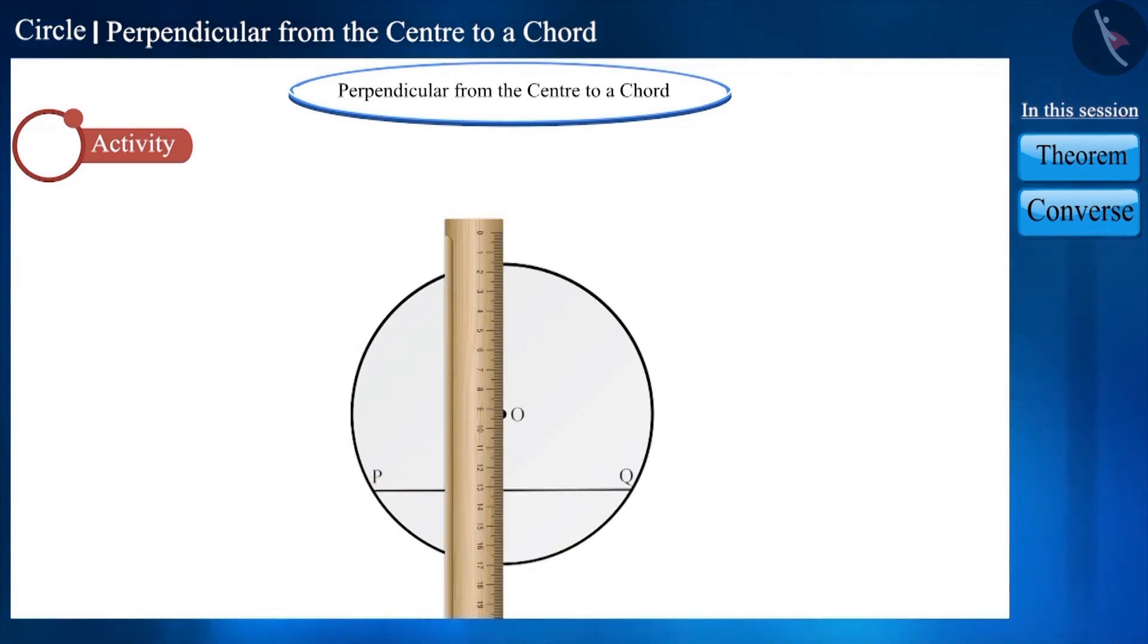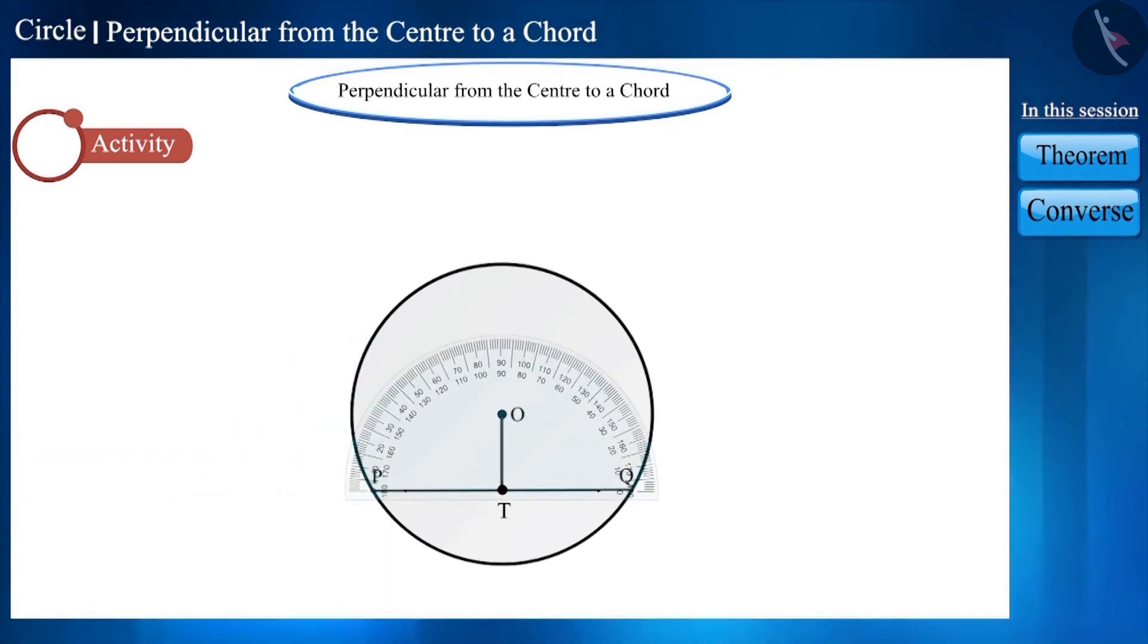From the center of the fold, draw a line on the chord. Let's call the point at which this line intersects chord PQ as point T. Now, with the help of a protractor, find the measurement of these angles.